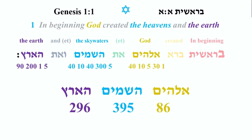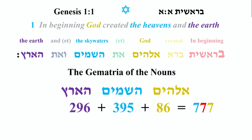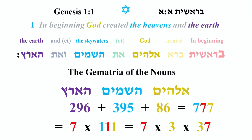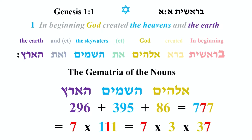If we take the gematria values of these words — Elohim, HaShemayim, and HaAretz — Elohim is 86, HaShemayim is 395, HaAretz is 296. Which adds up to 777 when you add them all up. So the gematria of the nouns is 777 — it's doing a little trisagion. And you can break that down: 777 is 7 times 111, and further as 7 times 3 times 37. The 7s, 3s, and 1s are everywhere in the scripture, in the Holy Writ.